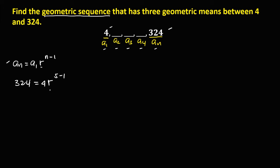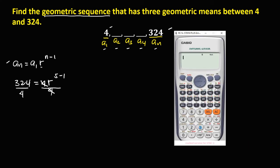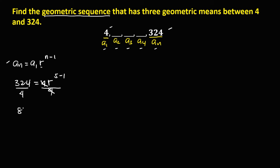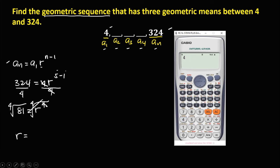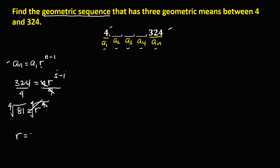To solve for the common ratio, divide both sides by positive 4. So 324 divided by 4 is 81. We have 81 equals r to the power 4, since 5 minus 1 is 4. Since the exponent of r is 4, we take the fourth root to solve for r. The fourth root of 81 is positive 3, so r is equal to 3.